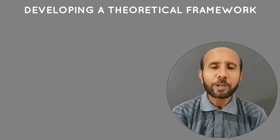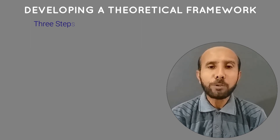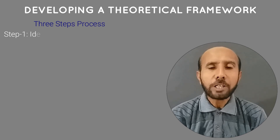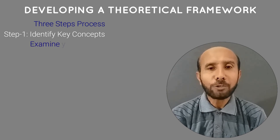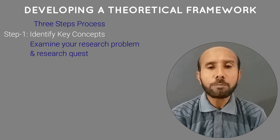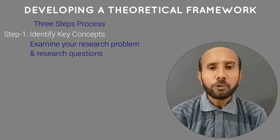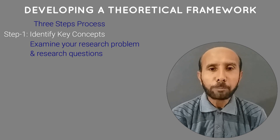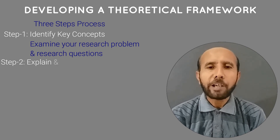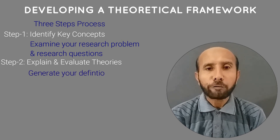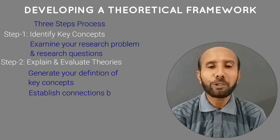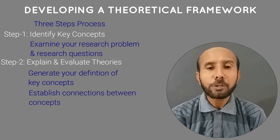How to develop a theoretical framework? You can develop a theoretical framework in three steps. Step one is to identify the key concepts involved in your research. You can identify the key concepts by examining your research problem and research questions. Once you have identified the key concepts, step two is to explain and evaluate the most relevant theories concerning your concepts, and then come up with your own definition of these concepts. You establish connections between these concepts and develop assumptions about the possible associations between them.